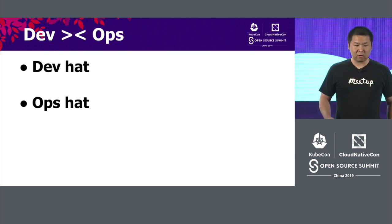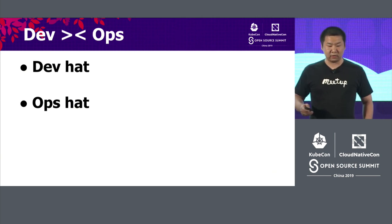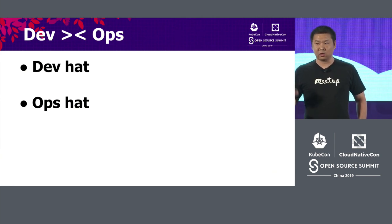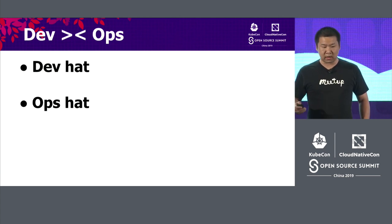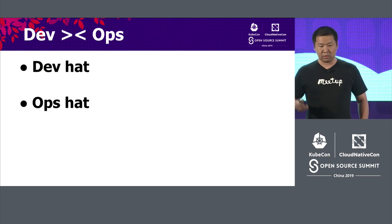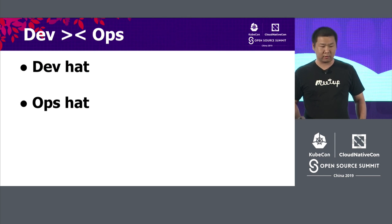DevOps actually has two camps. One is the Dev side, the other one is the Ops side. With the Dev mindset, you're always thinking: go Docker, go Kubernetes, go Service Mesh. But with the Ops mindset, you're always thinking about CVE problems, capacity planning, and on-call issues every single day.